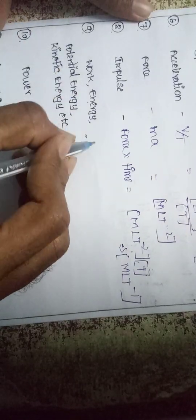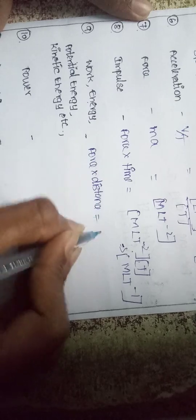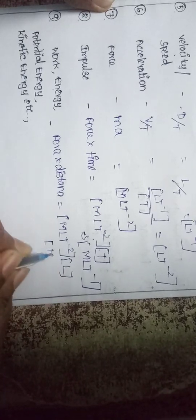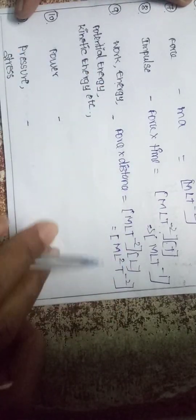Work and energy are force into distance. Force is M L T⁻², multiplied by distance L, giving M L² T⁻². This is the dimension formula for work, potential energy, and kinetic energy.